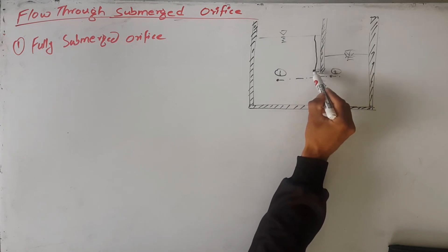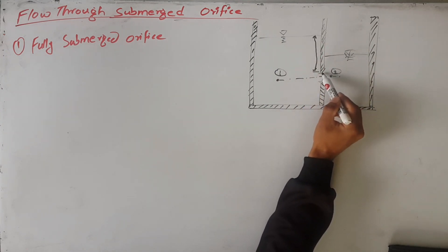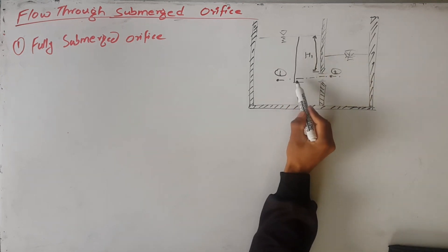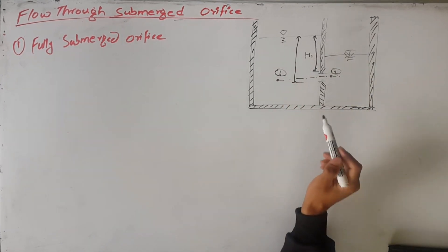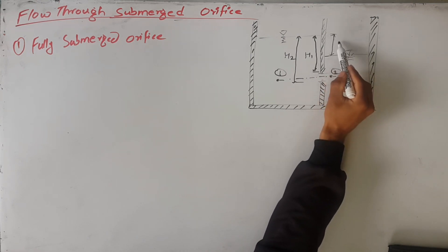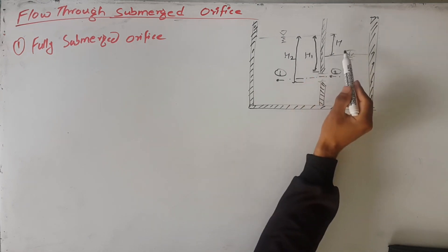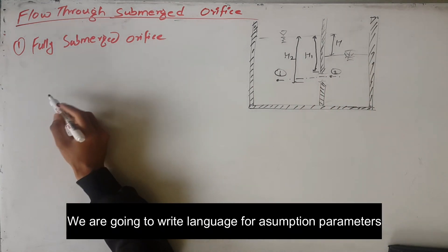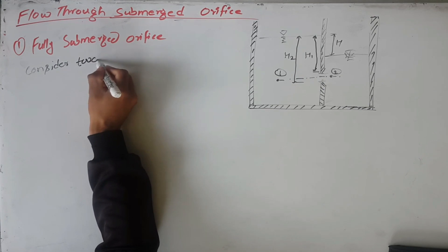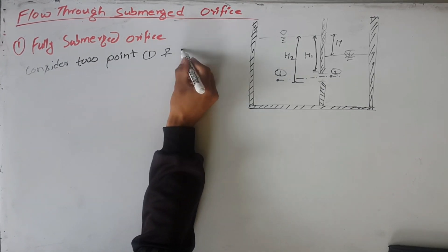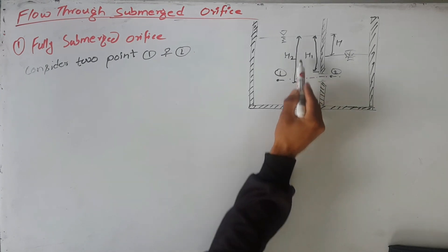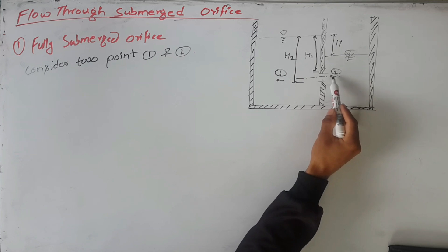Height of the liquid surface on the upstream side from the upper edge of the orifice is h1. Height of the liquid surface on the upstream side from the bottom edge of the orifice is h2. Let h be the difference of the liquid level between the upstream side and downstream side. We will consider point 1 on the upstream side of the orifice and point 2 on the downstream side of the orifice.